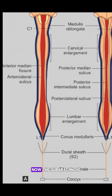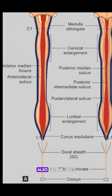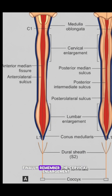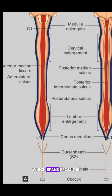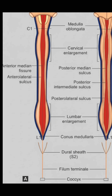Now, the subarachnoid sheath and subdural space also extend up to the lower border of S2. 5. Finally, remember the cervical enlargement, which spans from the C3 to T2 spinal segments.